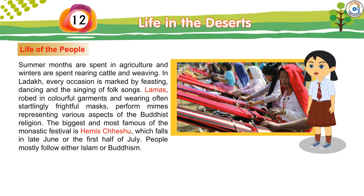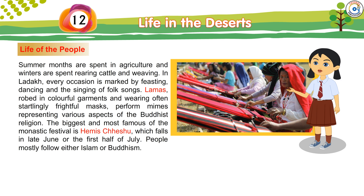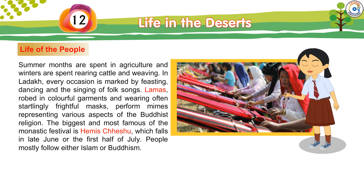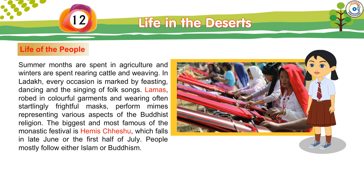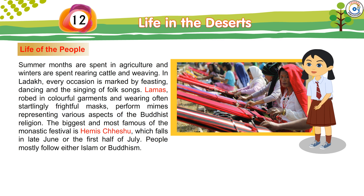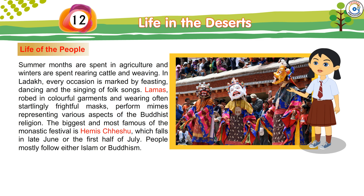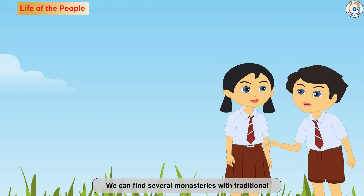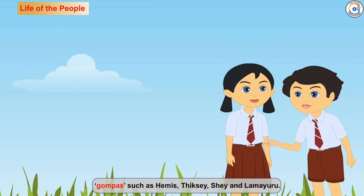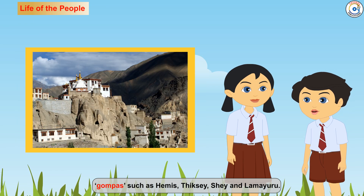In Ladakh, every occasion is marked by feasting, dancing, and singing of folk songs. Lamas, robed in colourful garments and wearing often startlingly frightful masks, perform mimes representing various aspects of the Buddhist religion. The biggest and most famous of the monastic festivals is Hemis Cheshw, which falls in late June or the first half of July. People mostly follow either Islam or Buddhism, and we can find several monasteries with traditional gompas such as Hemis, Thikse, She, and Lama Yuru.